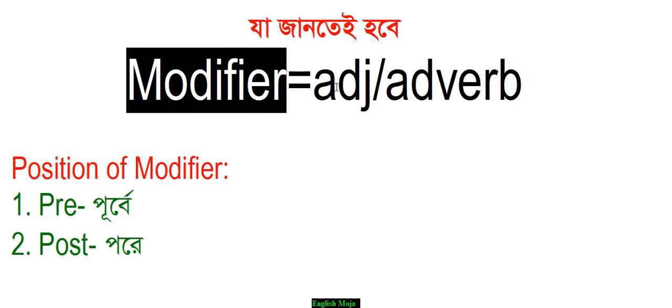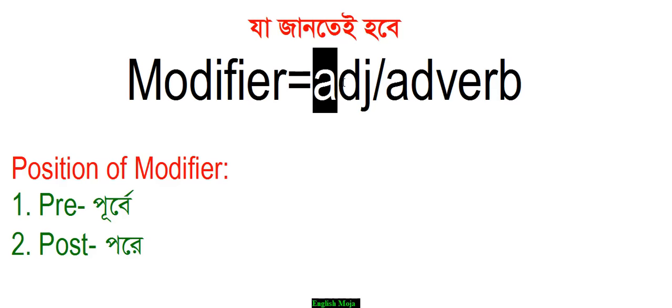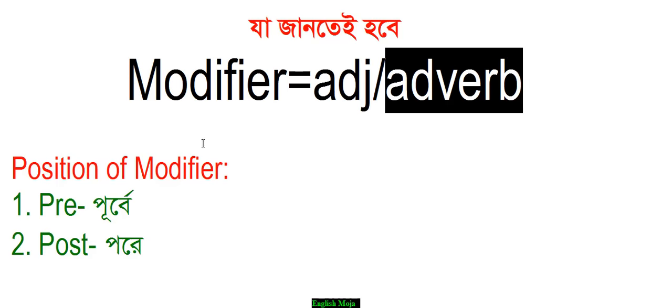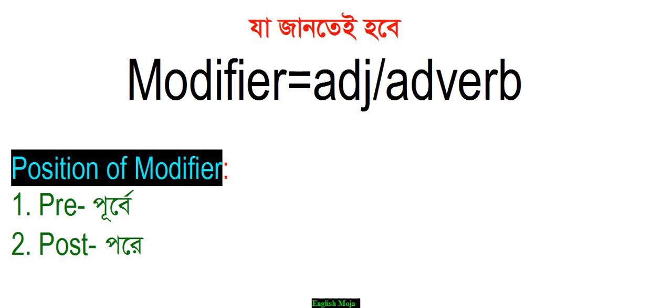Modifier in English is basically an adjective or an adverb. When we study modifier class, we see that adjective or adverb function the same way. The idea of modifier is one that appears in exam papers, and the modifier is a type of characteristic.